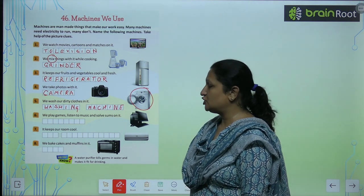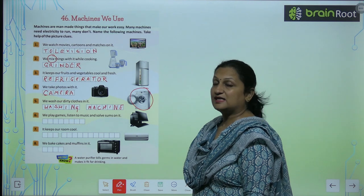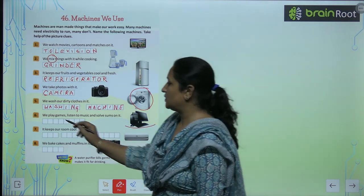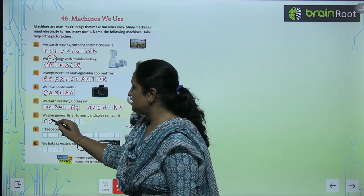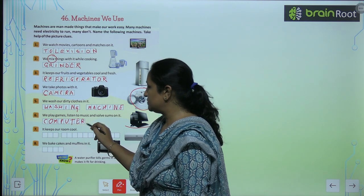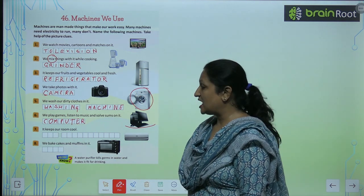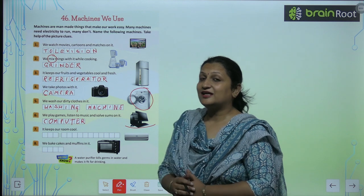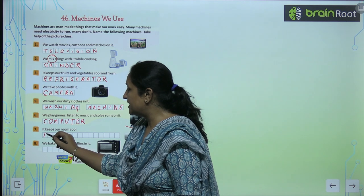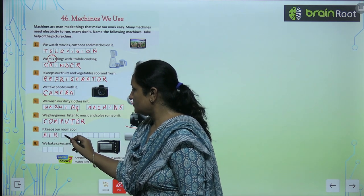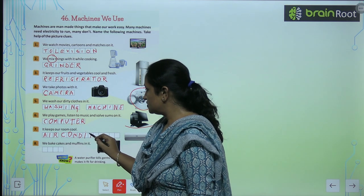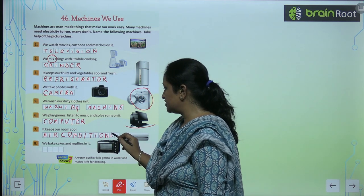We play games, listen to music and solve sums on it — that is a computer, C-O-M-P-U-T-E-R. It keeps our room cool — that is A-C, and the full form of A-C is air conditioner.